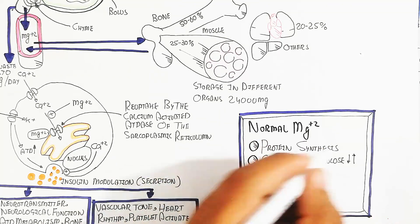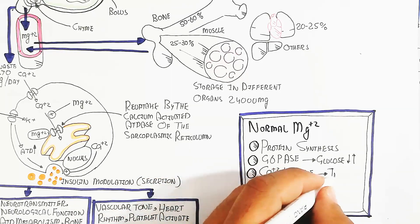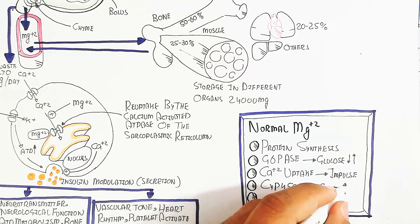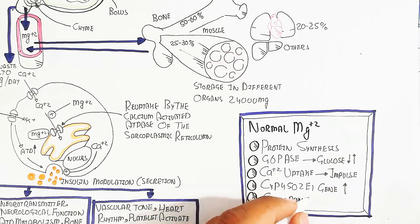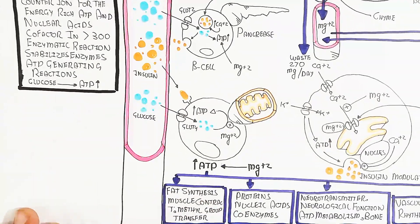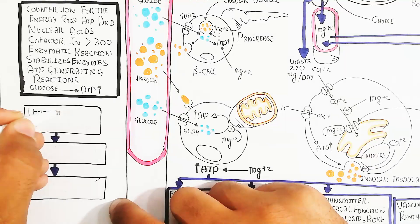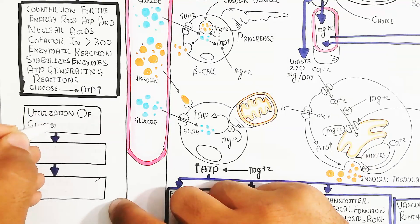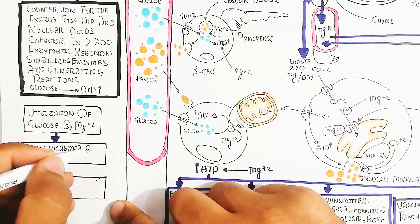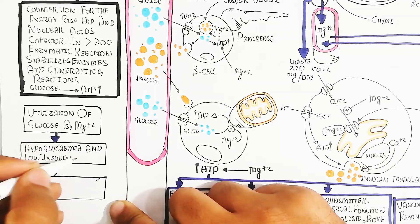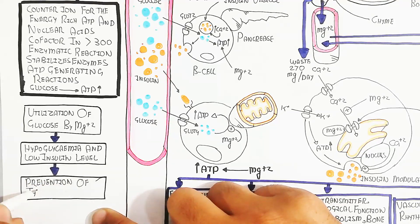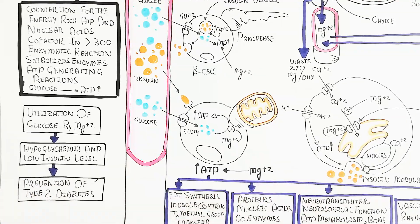Normal magnesium is very important for protein synthesis. Glucose-6-phosphatase enzyme function leads to glucose metabolism in glycolysis. Calcium uptake and nerve impulse function are important. Cytochrome P450 2E1 gene activation and glucuronidation involve metabolism, protein synthesis, and glucose metabolism. Utilization of glucose by magnesium leads to hypoglycemia, low insulin levels, and prevention of type 2 diabetes.